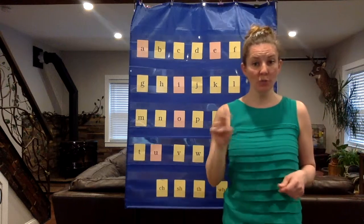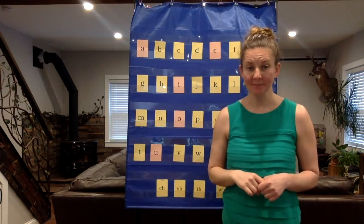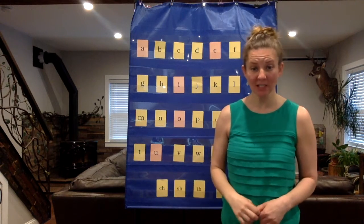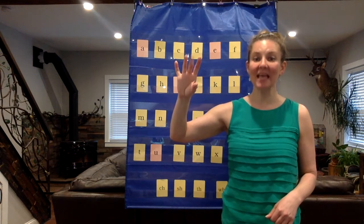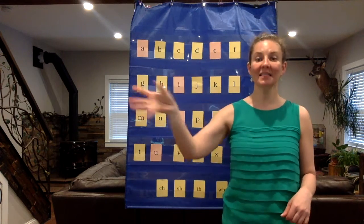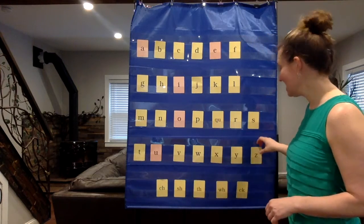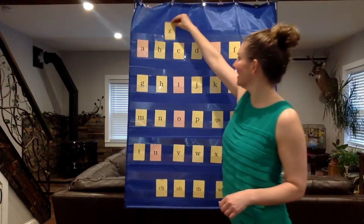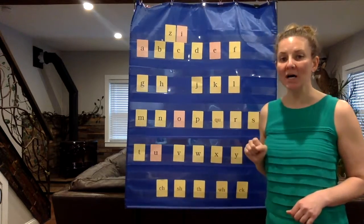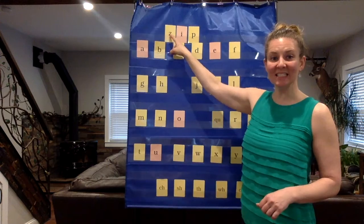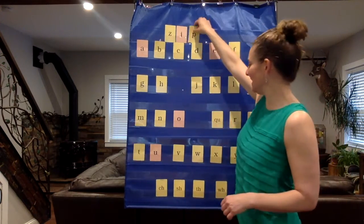We have two more words to go. Next one is zip. I had to zip up my jacket. Zip. Elbows up. Z I P Zip. All right, let's write it. I'll build it. Z, I, P. Z I P Zip. Reset.